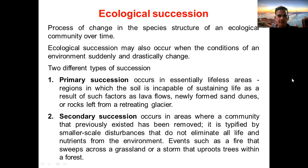Depending on how life originates, there can be two different types of succession. Number one is primary succession, which occurs in essentially lifeless areas — those incapable of sustaining any kind of life, such as areas where volcanic eruptions are taking place, where sand dunes are present, rocky mountain areas, or places where glaciers have retreated.